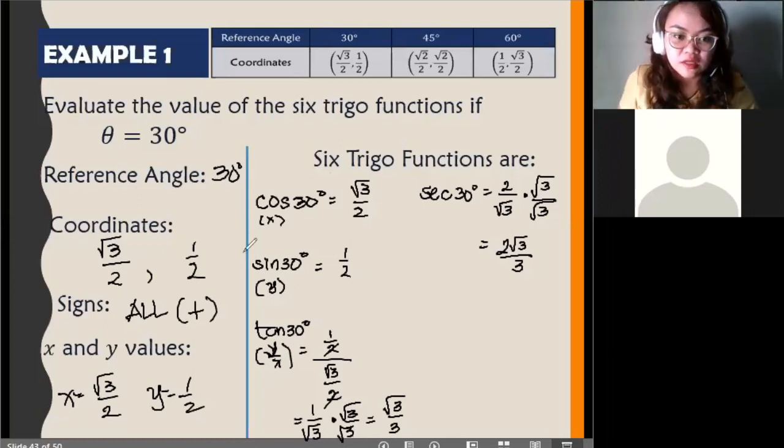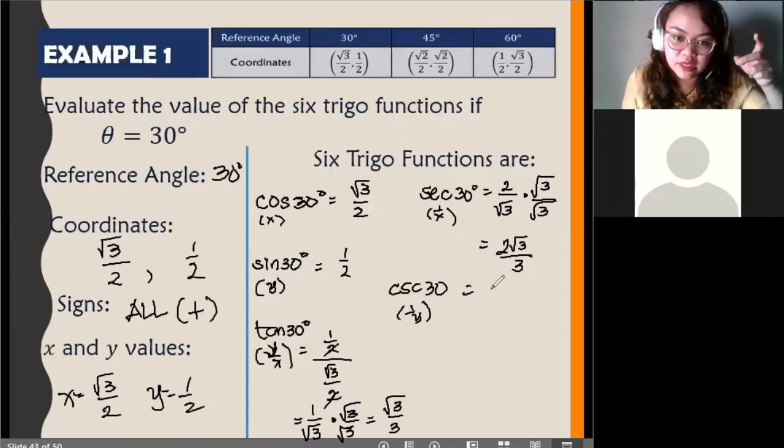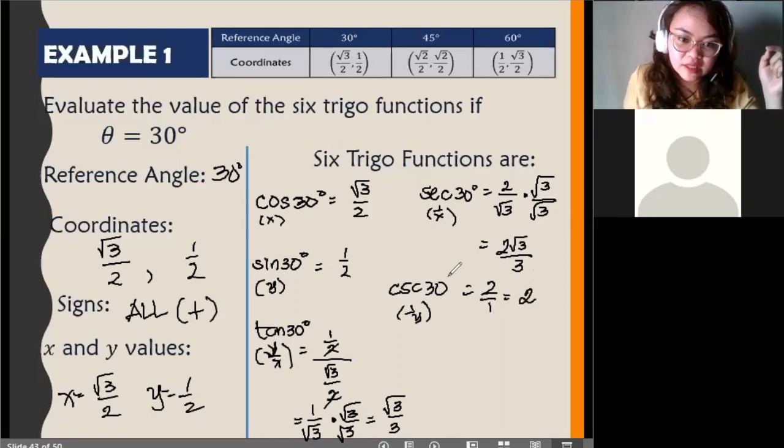Let's continue. If we get the reciprocal of sine 30, so that is cosecant 30. Cosecant 30. This is 1 over x. This is 1 over y. So, we have the reciprocal of 1 half. Babalik ta rin mo. You'll get 2 over 1 or simply 2.